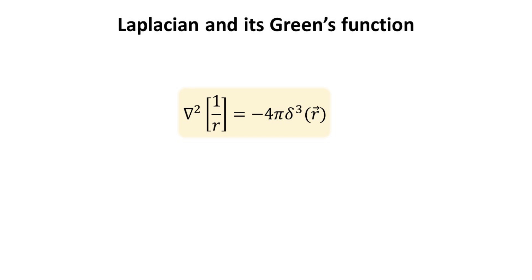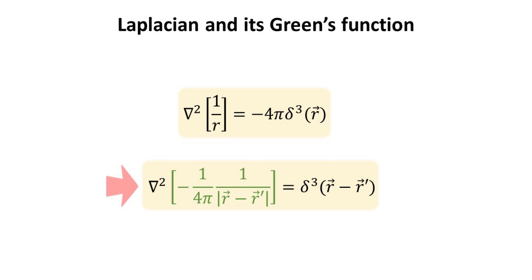To sum it up, the Laplacian of 1 over R is zero everywhere except at R equals zero, and has an integrated volume contribution of minus four pi. The Green's Function of the Laplacian, per definition, is then given by the expression highlighted in green. This is a very useful identity, which we shall exploit in the next chapter.